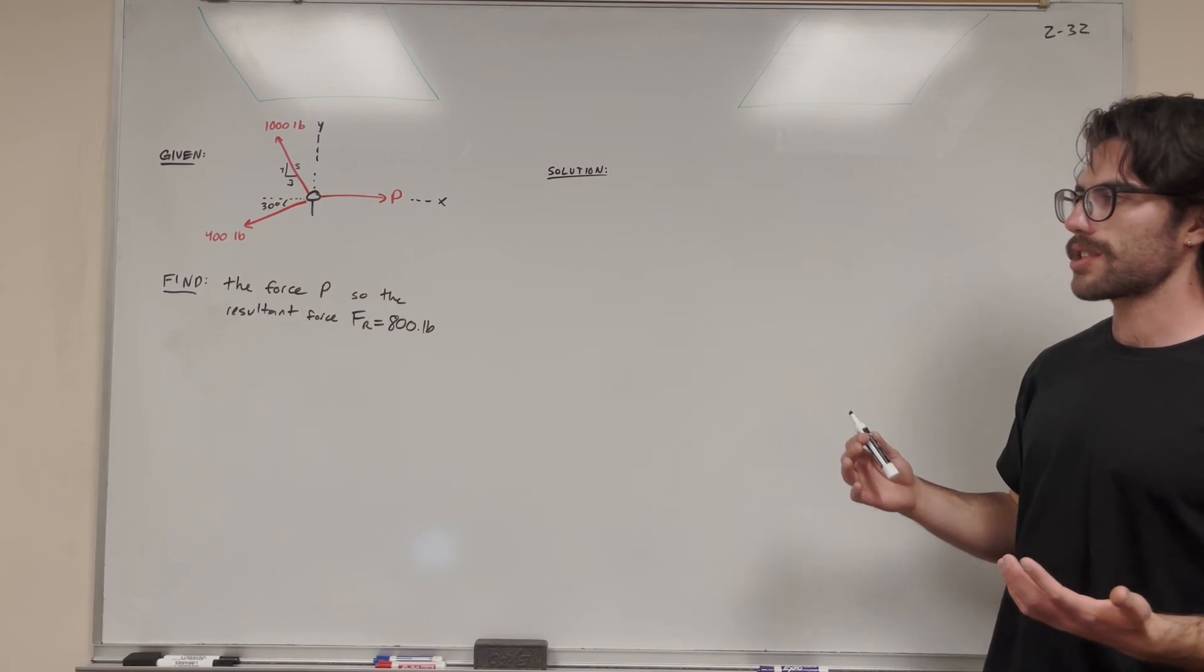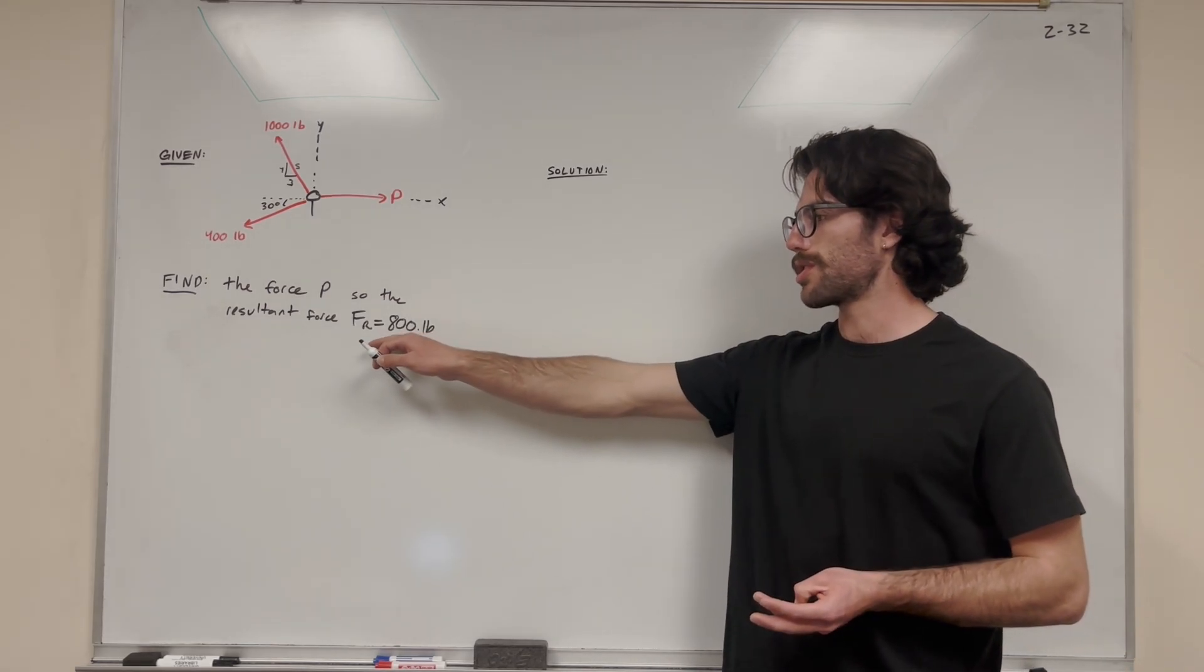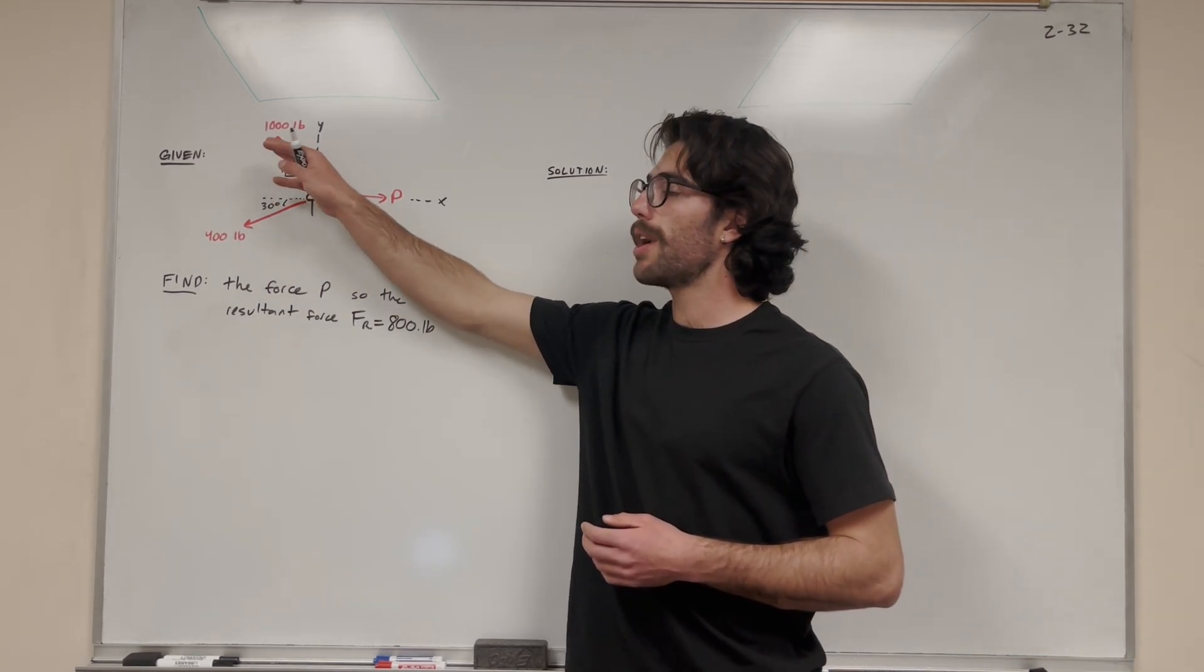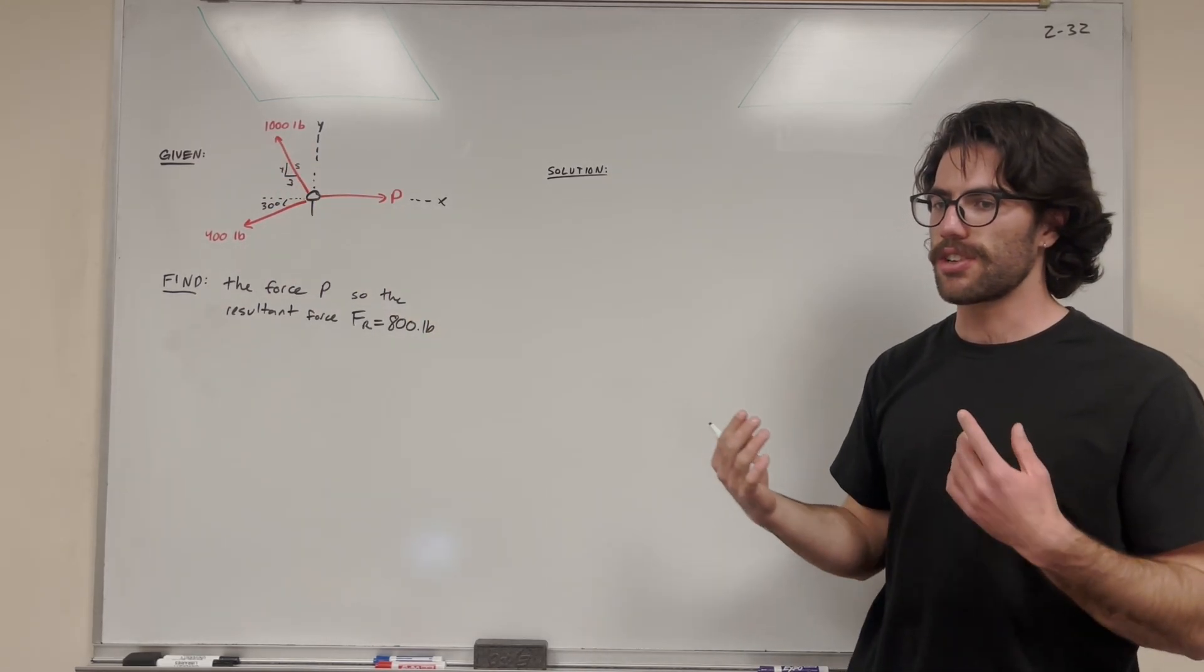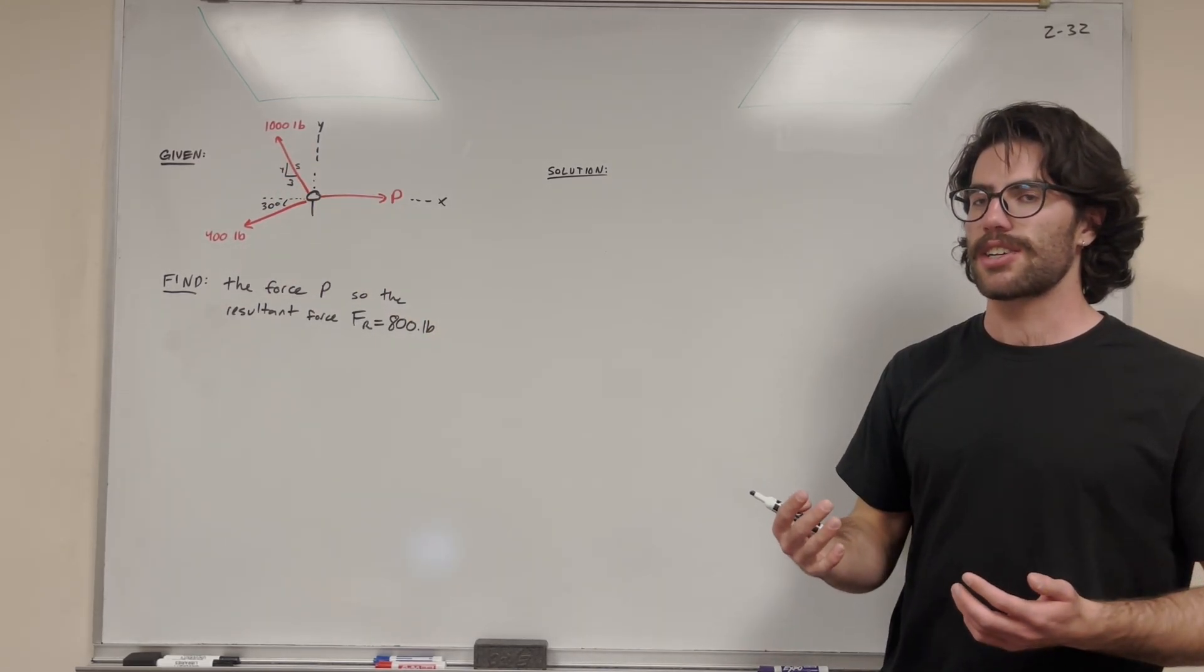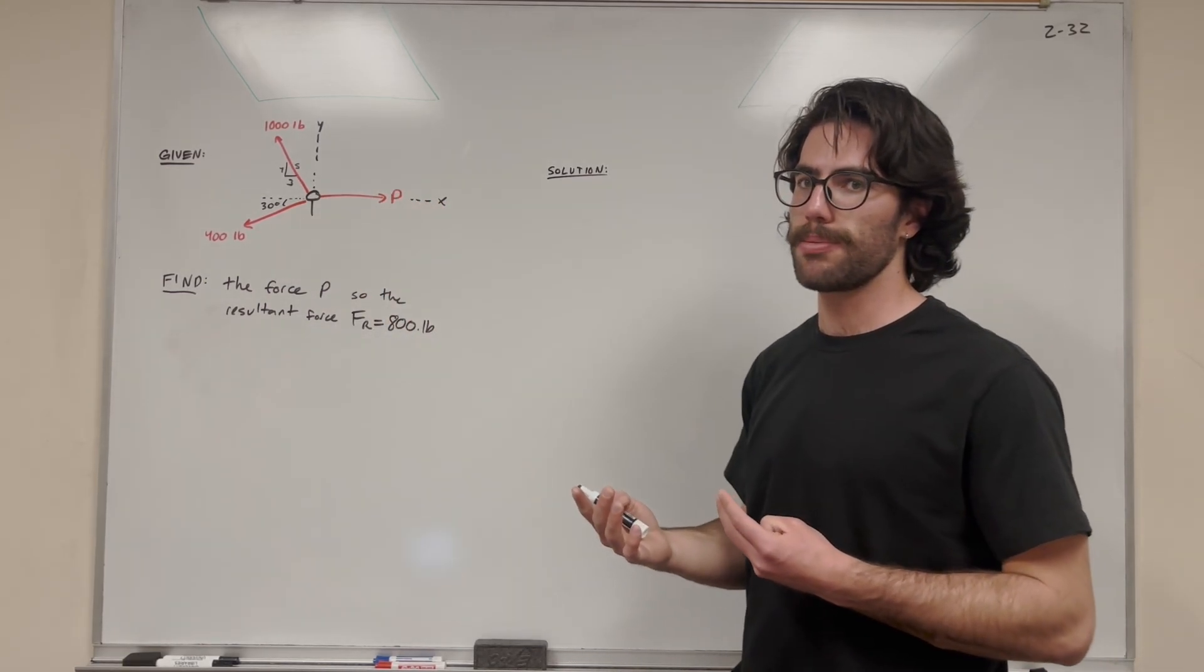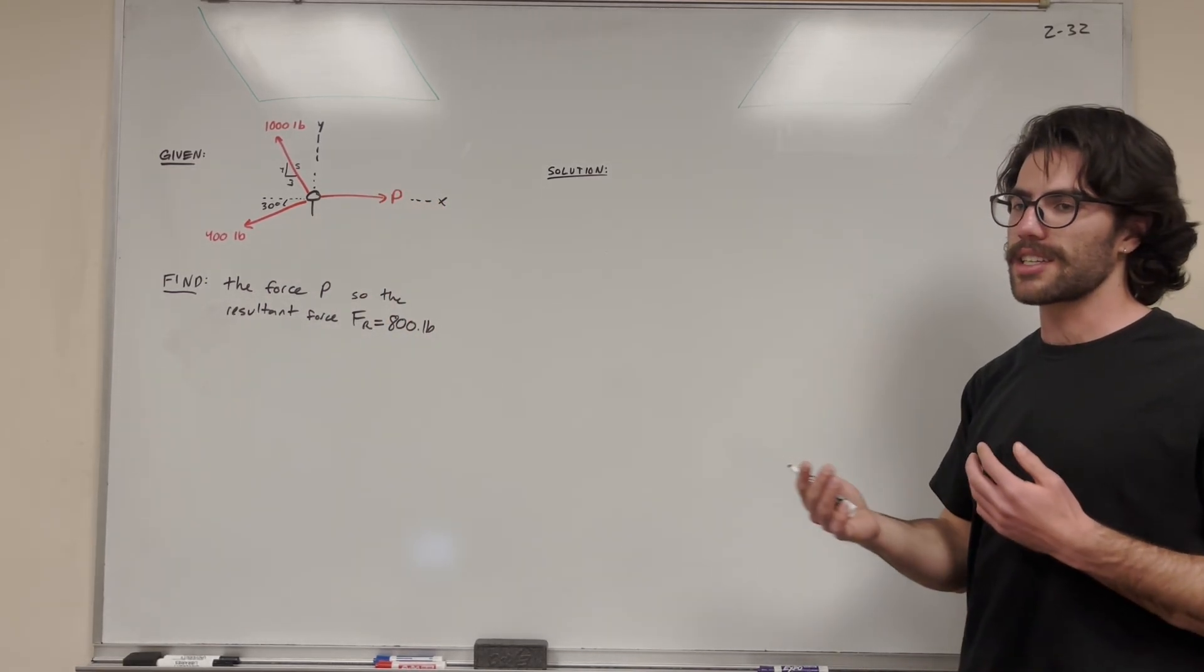So let's solve this. When we want to find the resultant force, we want to add all three of these forces up. But because they're all vectors acting in different directions, we need to write them as vectors before we add them. We need to turn each of these into vectors in the Cartesian plane, in the x and y direction.